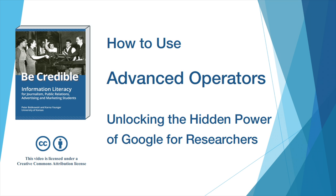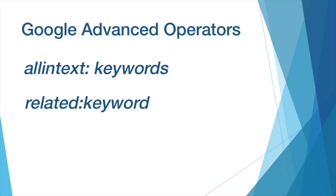In this tutorial for the BeCredible textbook, we'll discuss two advanced search operators for Google that are especially useful for journalists and researchers. The two advanced operators we'll be looking at are the all-in operator and the related operator.